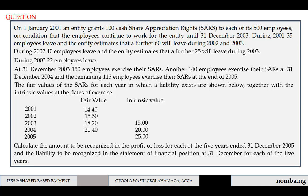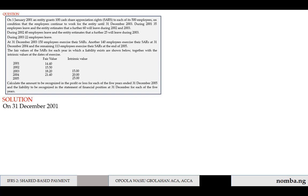The question requires us to calculate the amount to be recognized in profit or loss for each of the five years ended 31st December 2005, and the liability to be recognized in the statement of financial position at 31st December for each of the five years. Let's start from 31st December 2001.